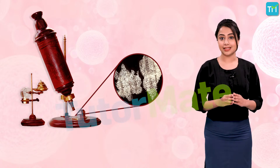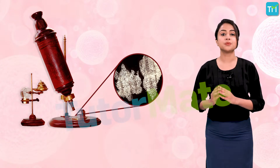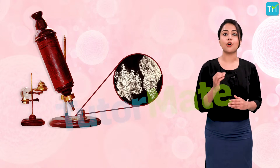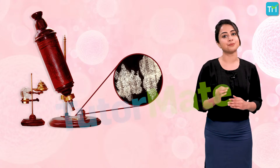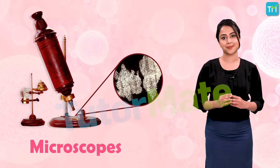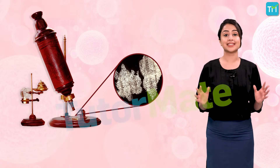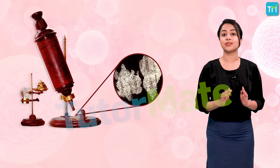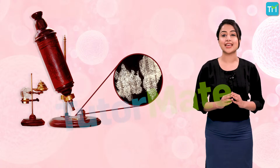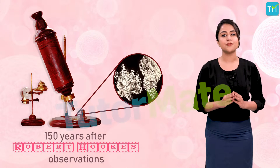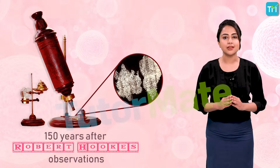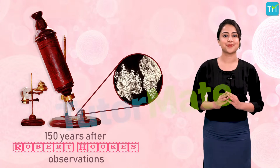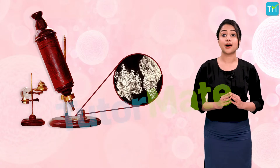These cells were observed much later with the discovery of improved microscopes. Surprisingly, very little was known about the cell for the next 150 years after Robert Hooke's observation.